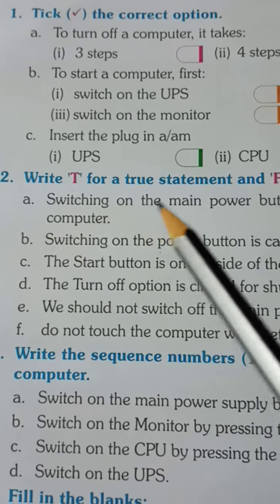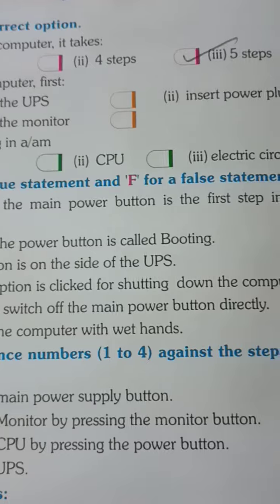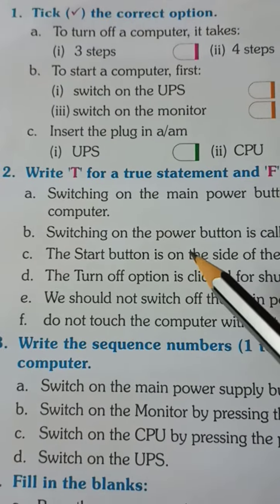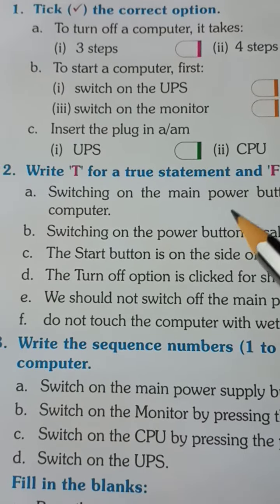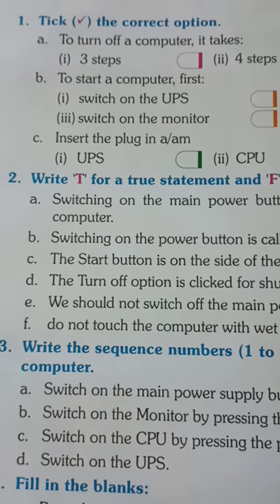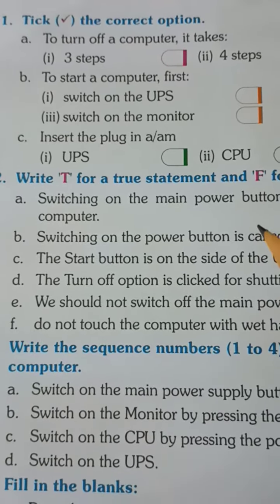Number 2. Write T for True Statement and F for False Statement. You will read the sentence. If your sentence is correct, then you will write the answer. If incorrect, then you will solve the false statement.